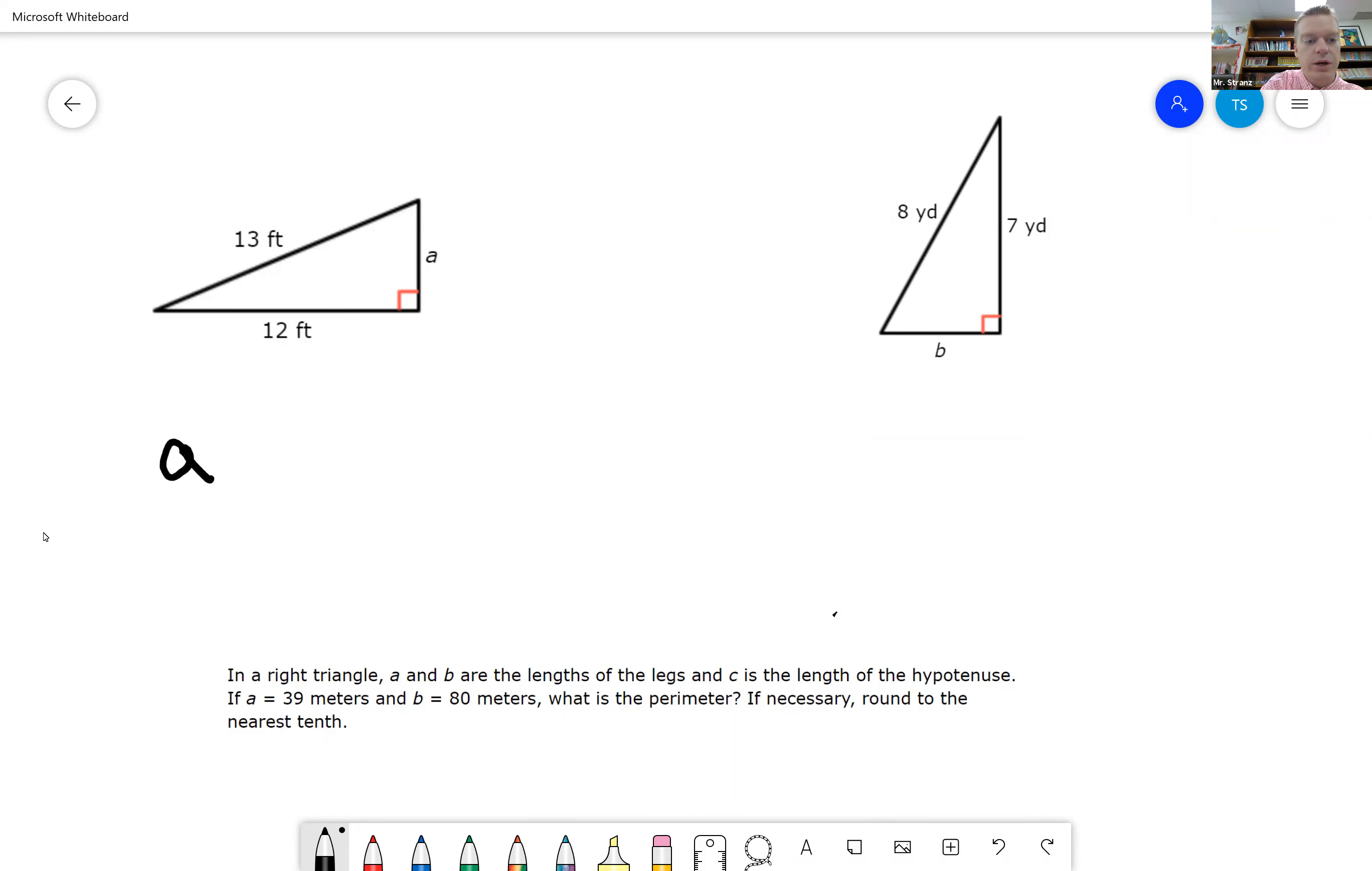So we're going to have A squared, which we don't know, plus B squared, 12 squared, equals C squared, which is 13 squared.